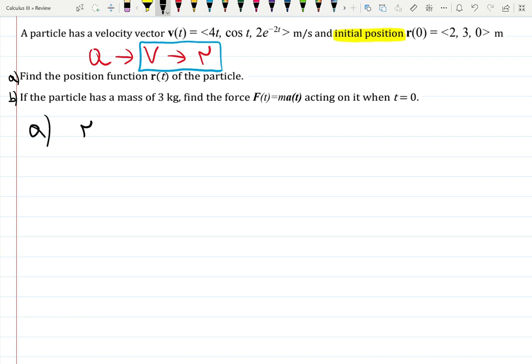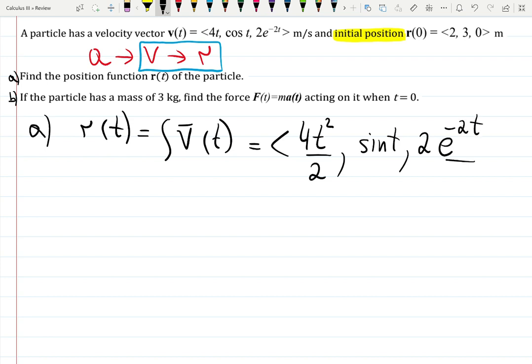So let's perform some integration. The position vector r(t) will be an integral of V(t). This integral is going to just integrate piece by piece. 4t gives me 4t² over 2. Cosine gives me sine, and then 2e^(-2t). You're supposed to use the U substitution but I actually know the shortcut. It's going to be a copy and then divide by the linear part of the exponent. That's exactly what you'd call du. So divide by minus 2.